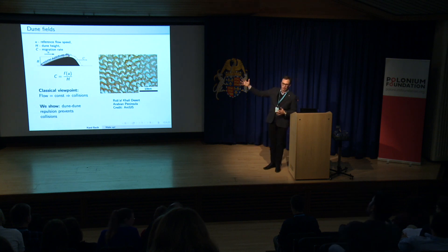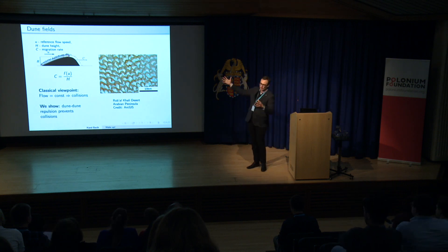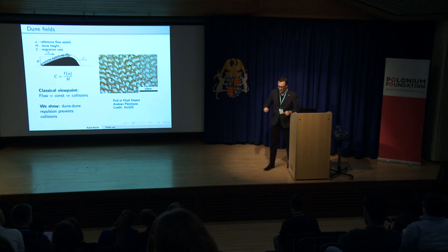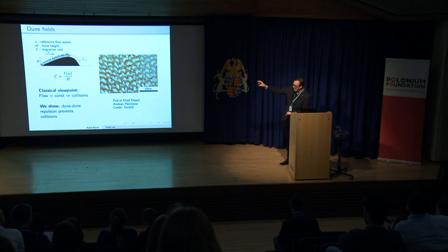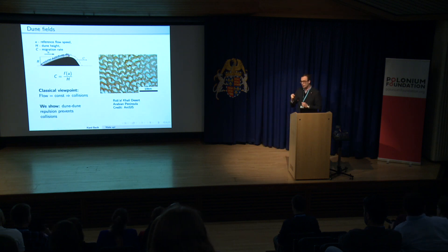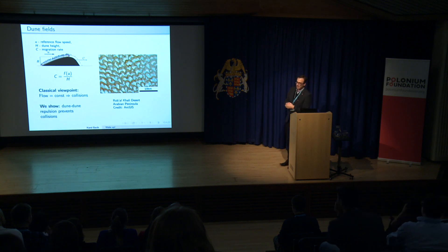In a dune field like that, people would say u is constant — wind conditions are the same for all dunes — so the only thing which matters is size. This is problematic because it means that small dunes move faster, and if there's a small dune upwind of a big dune, it inevitably should collide.